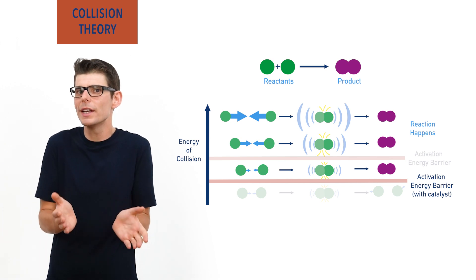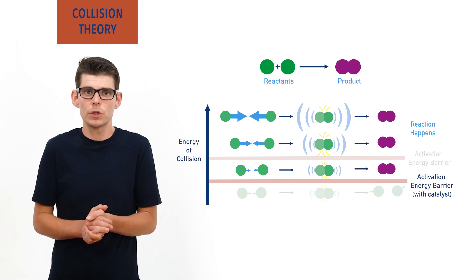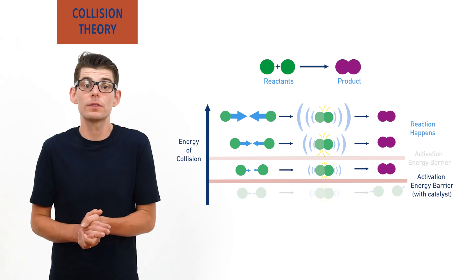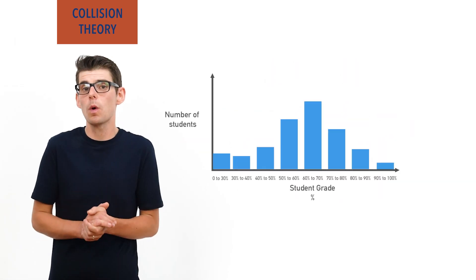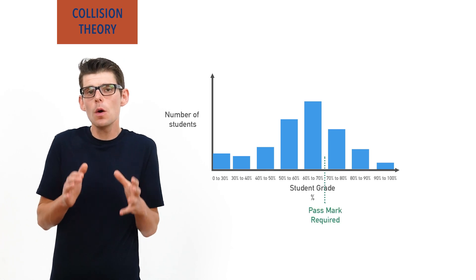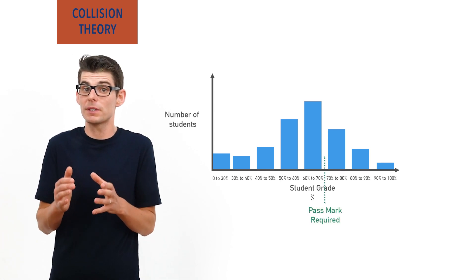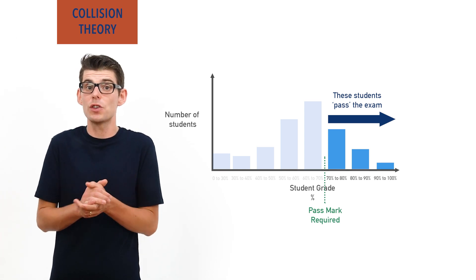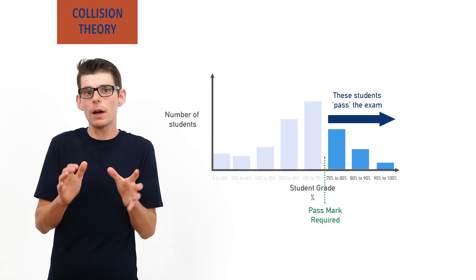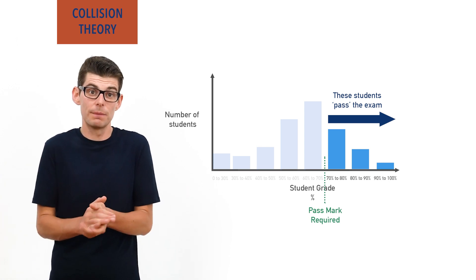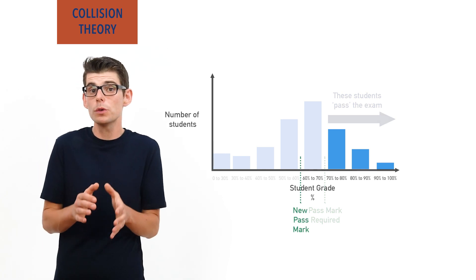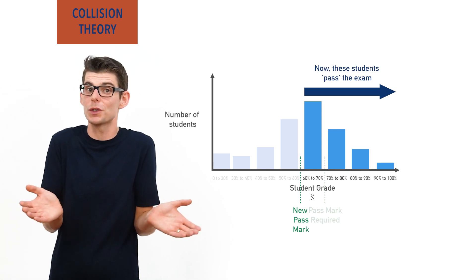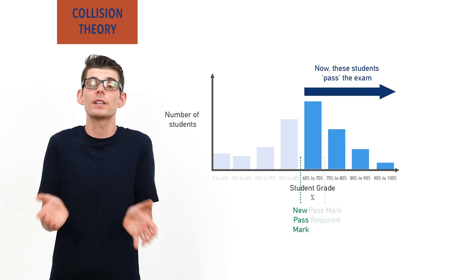The actual collisions themselves, or the energy of those collisions, don't change at all — it's just that more of them can become successful. It's a bit like students taking an exam. If the pass mark required for the exam is 70%, then only students who obtain 70% can pass, just like only hydrogen and chlorine molecules that collide with enough energy can react. If, however, the pass boundary is lowered to 60%, then more students will pass the exam, even though they, or their exam marks, haven't changed at all. The students themselves haven't done anything differently.